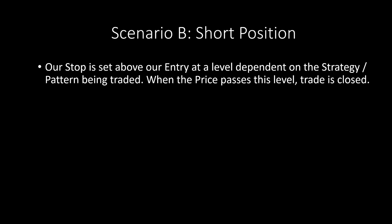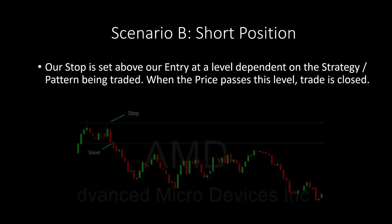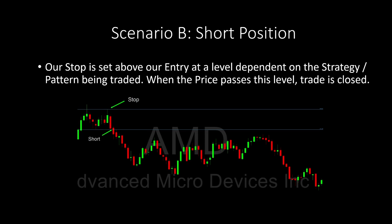Scenario B: we're going short, which means we are betting against the stock, and as the price drops we are gaining a profit. Our stop is going to be set above our entry, again at a level dependent on the strategy being traded. Here we see that we're shorting below this level and we have a stop displayed above with the arrow.